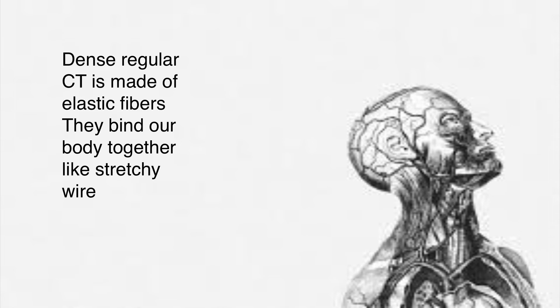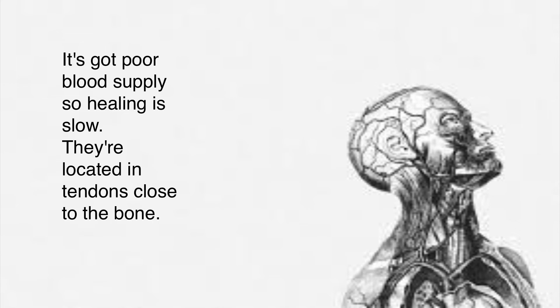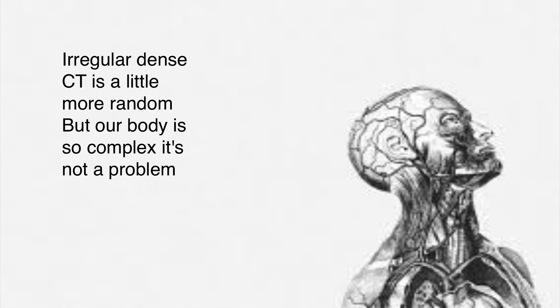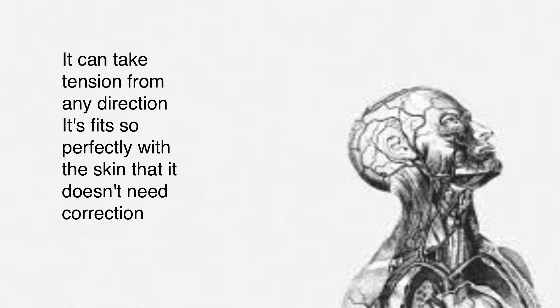Dense regular connective tissue has elastic fibers — it binds the body together like stretchy wire. It's got poor blood supply so healing is slow. Located in tendons close to the bone. Dense irregular CT is more random in its fiber arrangement, taking stress from multiple directions so it fits perfectly.